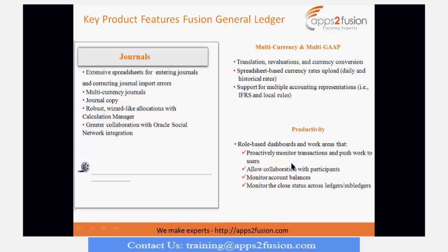You can also monitor the close status across ledgers and subledgers. In EBS, we had to run different reports to know what transactions were posted or what subledger transactions had been generated. In Fusion, Oracle has provided a period close dashboard where you can monitor all your subledgers and subledger periods from one single place. You can see what ledgers have been closed, whether there is any unaccounted, unposted, unimported data, or unvalidated invoices — all without running any reports, from a single page.